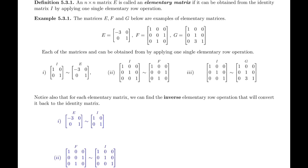All three matrices E, F, and G are examples of elementary matrices. For matrix E, if we apply the single operation of multiplying row one by negative three, we turn the identity matrix I into E. For matrix F, swapping row two and row three is the single elementary row operation that turns I into F. For matrix G, taking row three plus three times row two as the new row three turns I into G. That makes E, F, and G all elementary matrices.